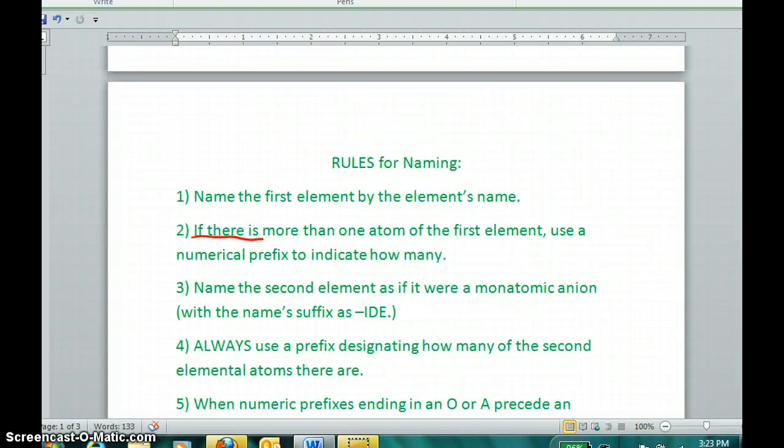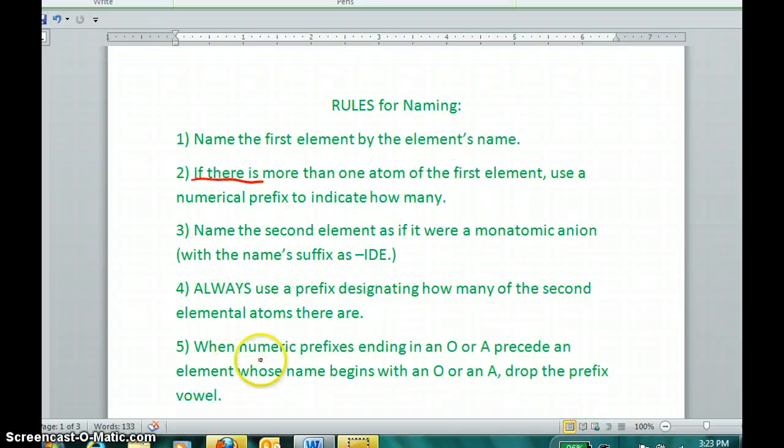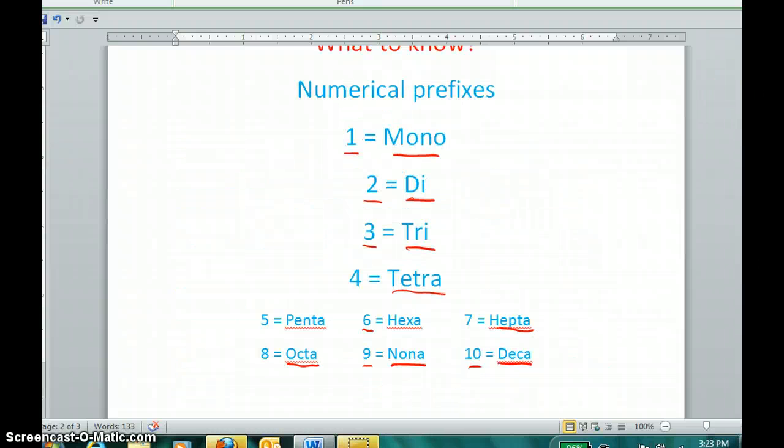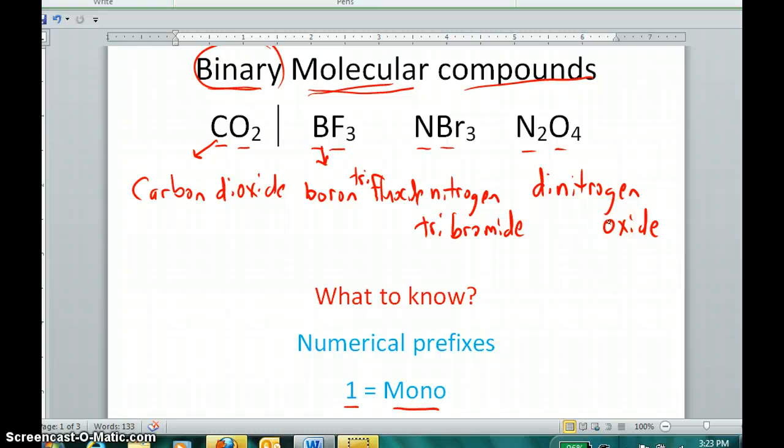But that takes us to our fifth rule. When numeric prefixes ending in an O or A, such as tetra ends in an A, precede an element whose name begins with an O or an A, and in this case, this begins with an O or an A, the rule says to drop the O or A from the prefix. So the temptation is to write tetraoxide for this compound. However, that sounds like you got a problem if you say tetraoxide. So we're going to drop the O or A from the preceding prefix to name this compound. And it's much more fluid off the tongue if we call it dinitrogen tetroxide.